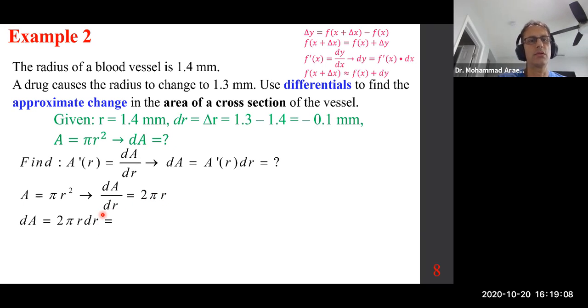So what is r? Original r of 1.4 millimeters. What is dr? Negative 0.1 millimeters. So when you do the math, you get negative 0.28π millimeters squared. The units for dA are the same as the units for A, okay class? Because it's changing. Instantaneous rate of change, in essence. And if you replace the π with 3.14159, that's what you get. And that's fine.